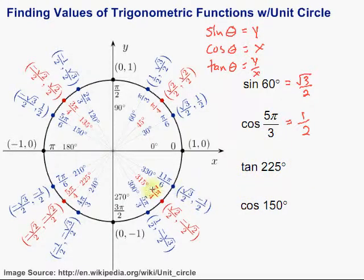Then the tangent of 225 degrees. 225, there it is. And the tangent is y over x. So y over x. Well, looks like we have the negative square root of 2, and that's going to be over the negative square root of 2 over 2.